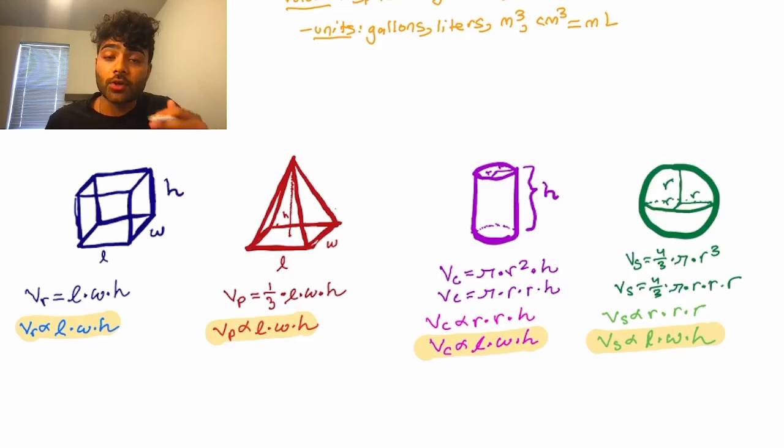It's important to note that this only holds true when you're comparing objects of the same shape. So pyramids to pyramids, or spheres to spheres, you cannot apply the proportionality when comparing, for example, a pyramid to a cylinder. Thank you so much for watching, and I hope this helps you in solving your pre-workshop problem.